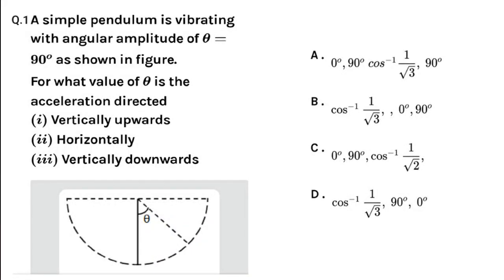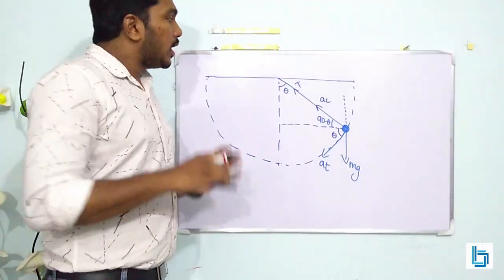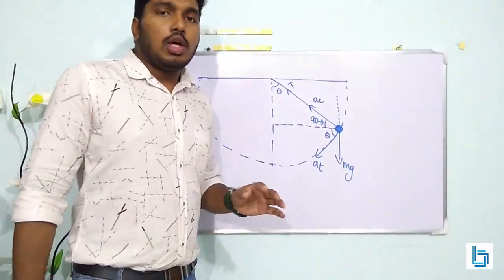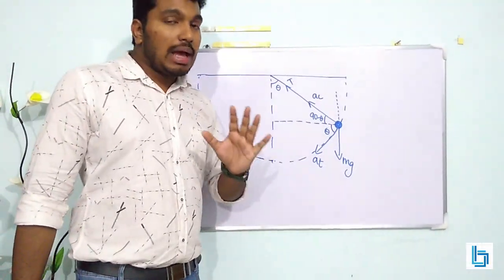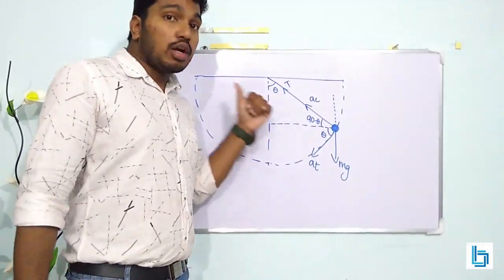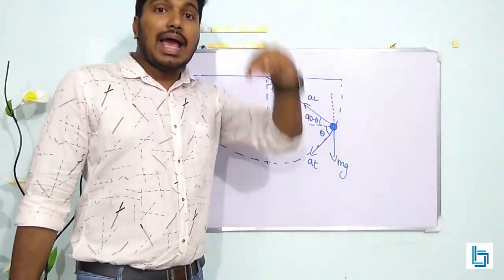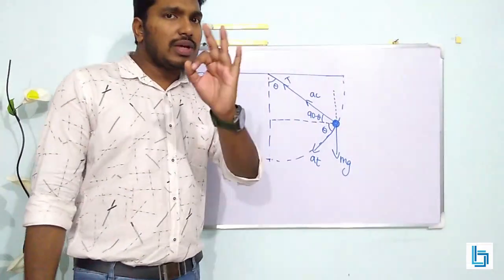A simple pendulum is vibrating with an angular amplitude of 90 degrees. For what value of theta is the acceleration directed: first, vertically upwards; second, horizontally; and third, vertically downwards? This question is from the chapter on oscillations. The angular amplitude is 90 degrees, and we need to find the angle theta for each of these three cases.